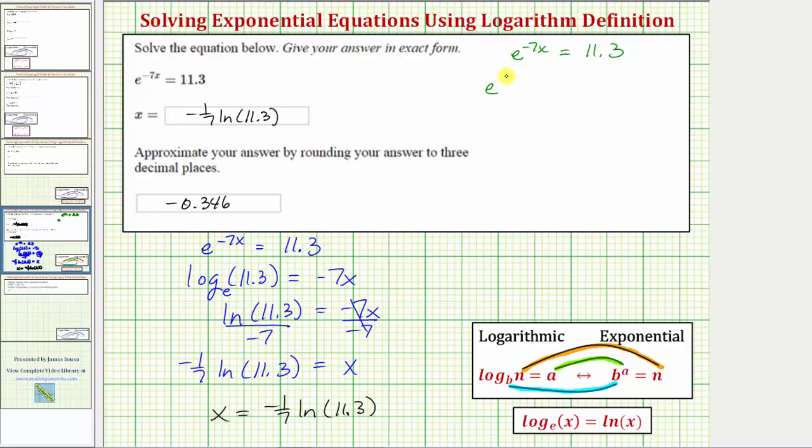So we would have e raised to the power of negative seven times negative one-seventh natural log 11.3 equals 11.3.